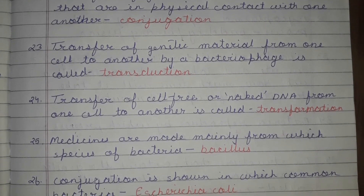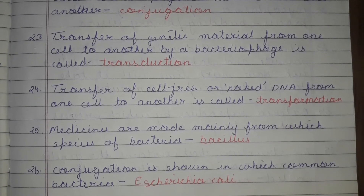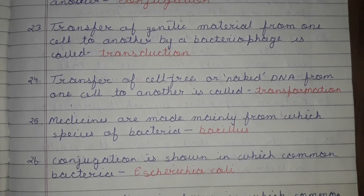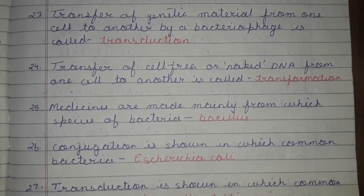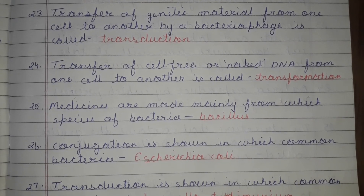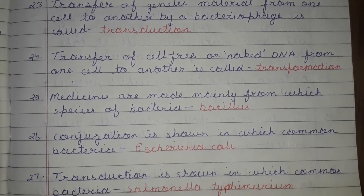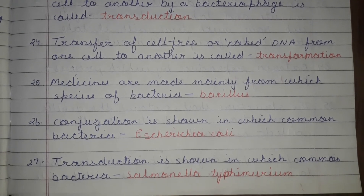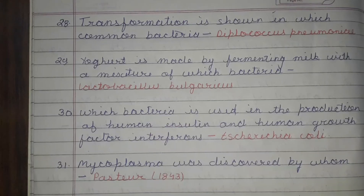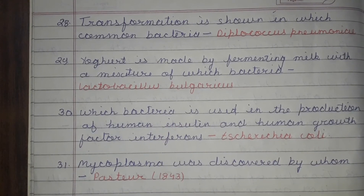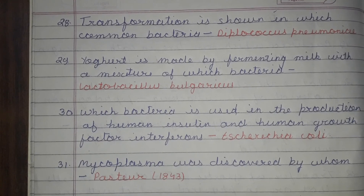Medicines are made mainly from which species of bacteria? They are bacillus. Conjugation is shown in which common bacteria? Salmonella typhimurium. Transformation is shown in which common bacteria? Diplococcus pneumoniae.